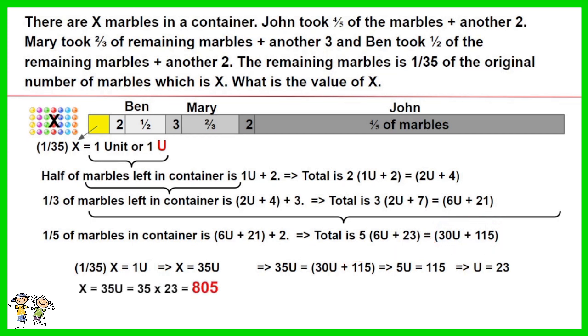X = 35U = 35 × 23, which is equal to 805.